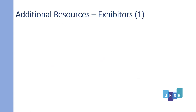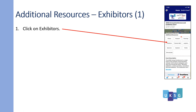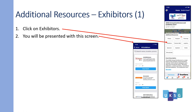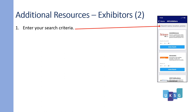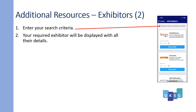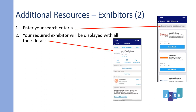Exhibitors, first slide. Click on exhibitors. You are presented with this screen and you can then enter a search to find a specific exhibitor. Exhibitors, second slide. Enter your search criteria and your required exhibitor will be displayed with all their details.